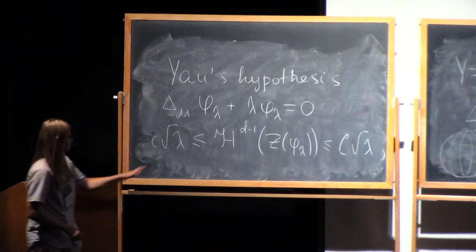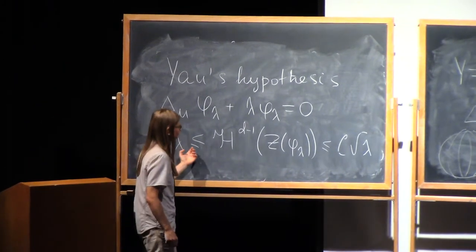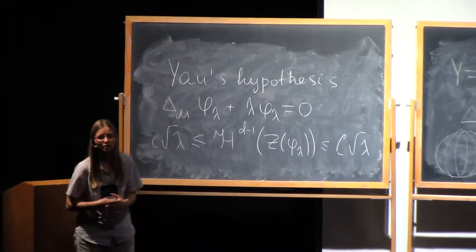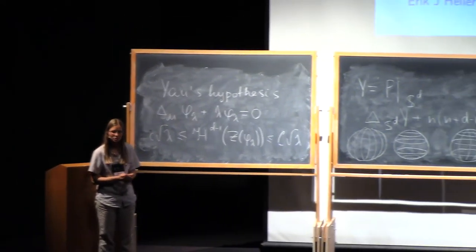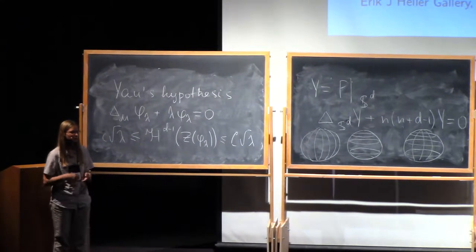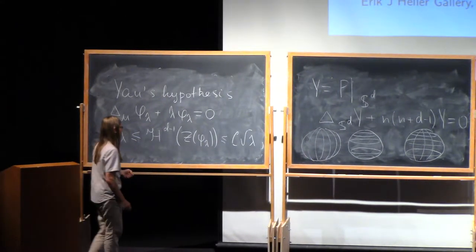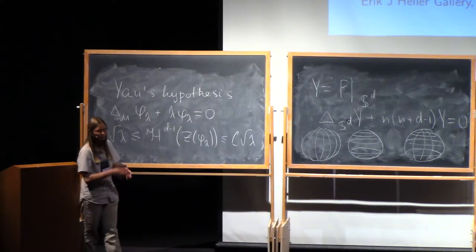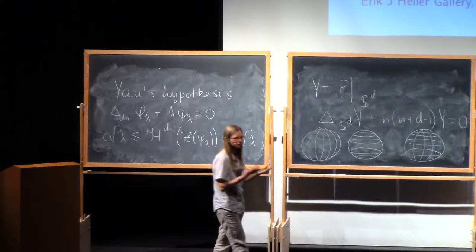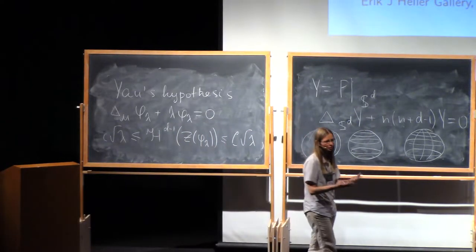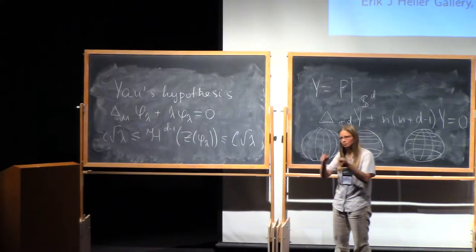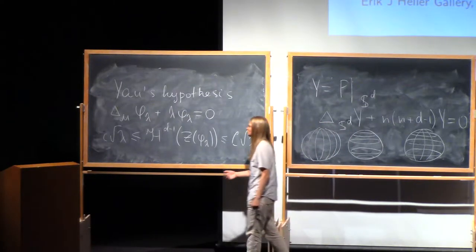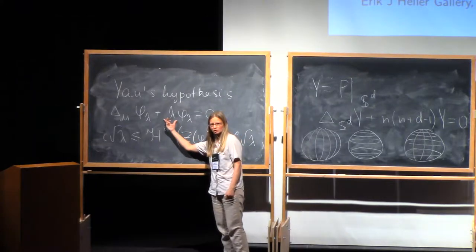And the hypothesis was proved in the end of the 80s by Donnelly and Fefferman for the case when metric is real analytic. We'll discuss some of the ideas behind it tomorrow, hopefully. But it will give you that on the torus and the sphere with standard metric, looking at the picture, if you're able to estimate the length of the zero set, you know approximately what is your eigenvalue.